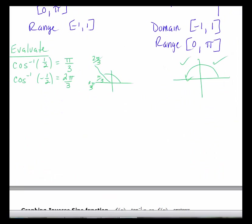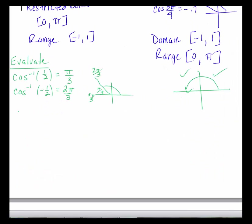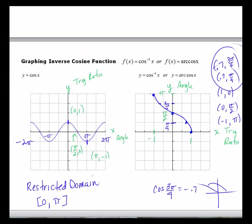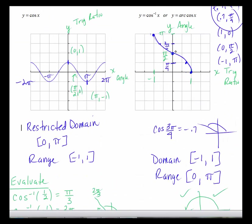Let's try another one: the inverse cosine of 0. What angle has a cosine of 0? That's pi over 2. You can see on the graph that when x equals 0, the y-value is pi over 2. The angle whose cosine is 0 is pi over 2.